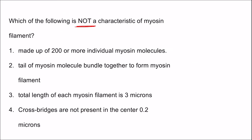Answering the MCQ: the myosin filament is made up of 200 or more individual molecules — correct. The tails of myosin molecules bundled together form the myosin filament — correct. The total length of each myosin filament is 3 microns — this is wrong; it is 1.6 microns. Cross bridges are not present in the center 0.2 microns — correct, because that region consists only of tails.